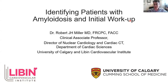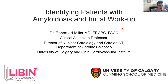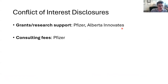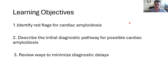Thank you for that introduction. We'll be talking about identifying patients with amyloidosis and then the initial workup. Over the course of the plenary, you'll really see things from the beginning all the way through to treatment. I do have some conflicts to disclose: I receive some research funding through Pfizer for amyloidosis-related work, and funding through Alberta Innovates for machine learning-related work that's unrelated to today's discussion. We have three major learning objectives: identifying red flags for cardiac amyloidosis, the initial diagnostic pathways — which go along two separate paths — and ways to minimize diagnostic delays.